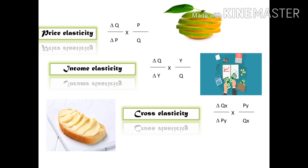For price elasticity, P is the price and Q is the quantity demanded. For income elasticity, Q is the quantity demanded and Y is the income of consumers. For cross price elasticity, X is the price of commodity X and Y is the price of commodity Y — if you want to analyze the change in price.